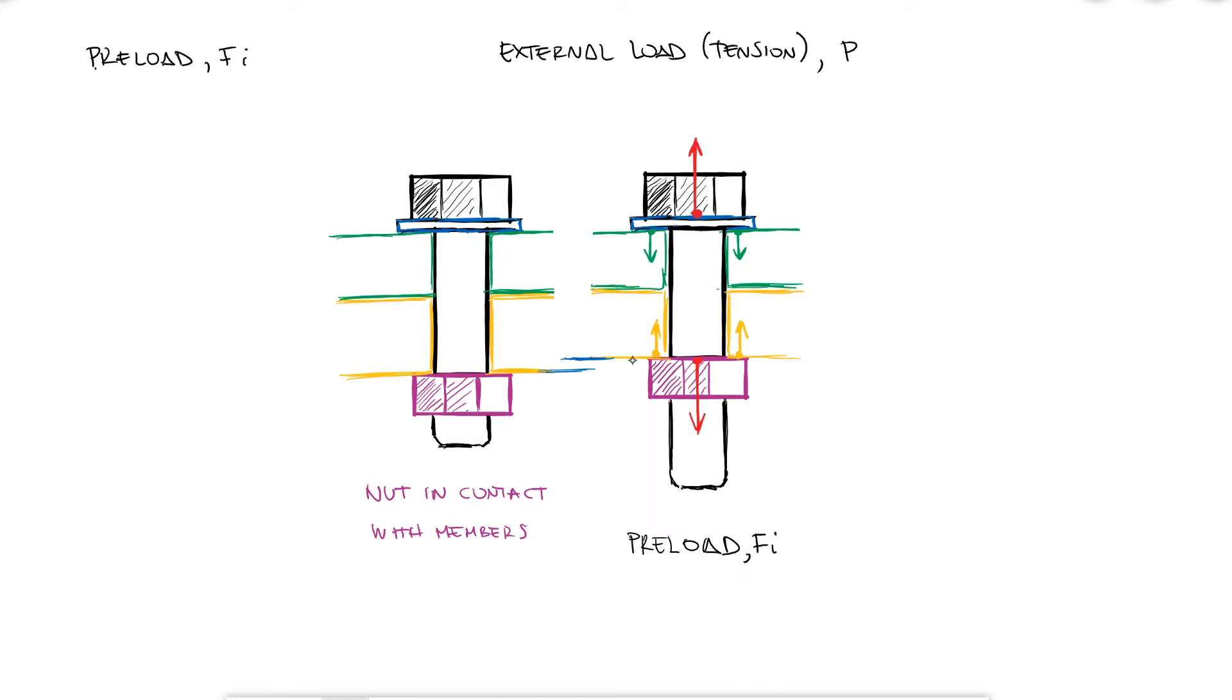During this preload, the deflection of the members and the deflection of the bolt is not the same. Since the force going into the bolt is a reaction of the force created by the resistance of the members, even if they're both deforming, the forces are the same, Fi. Therefore, the deflection of the bolt is the preload over the stiffness of the bolt, and the deflection of the members is the preload over the stiffness of the members, which are clearly not the same if their stiffness values are not the same.